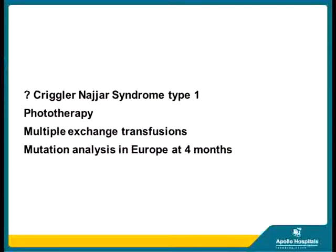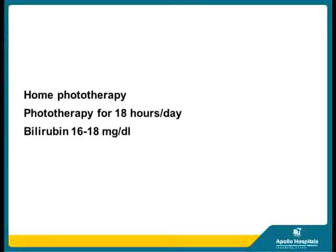A possibility of Crigler-Najjar type 1 was considered in view of the high bilirubin levels. The child was on phototherapy, underwent multiple exchange transfusions, and mutation analysis was done in Europe at 4 months, which gave the team in Qatar a definitive diagnosis. The child was then on home phototherapy requiring 16 to 18 hours a day, and bilirubin remained between 16 to 18.